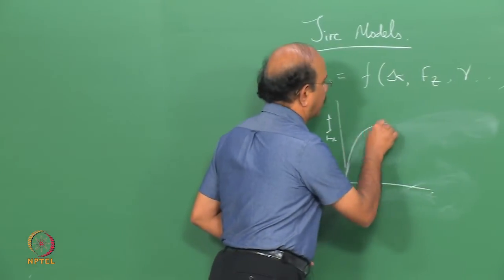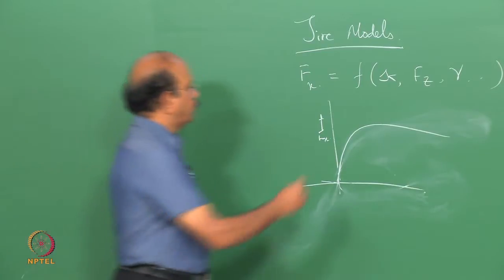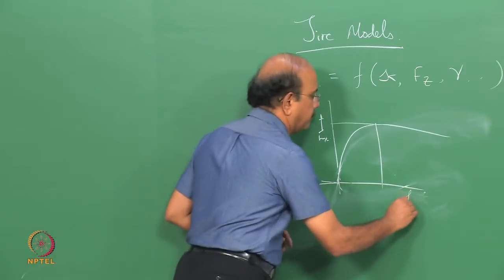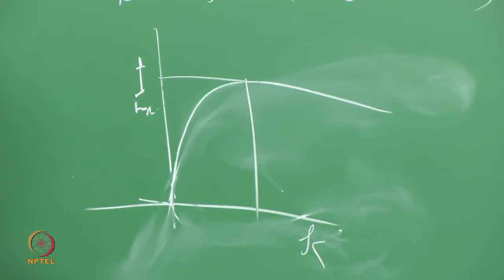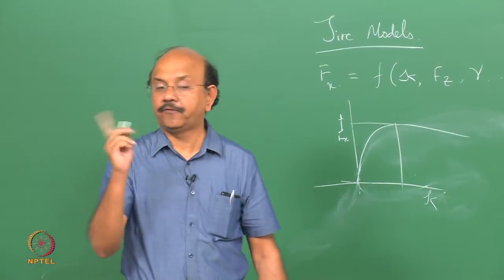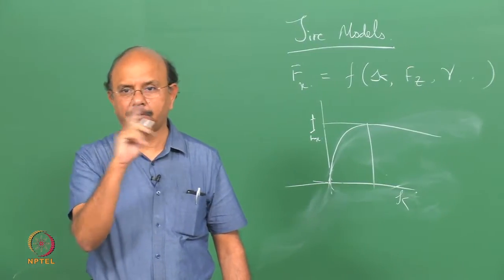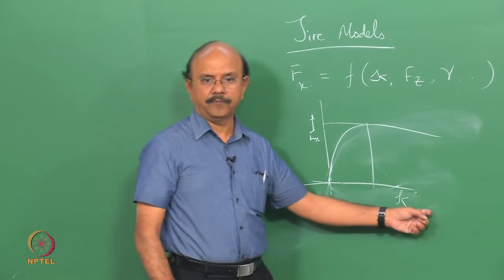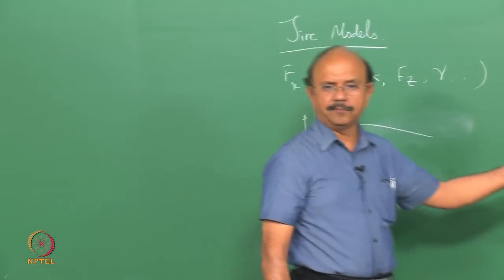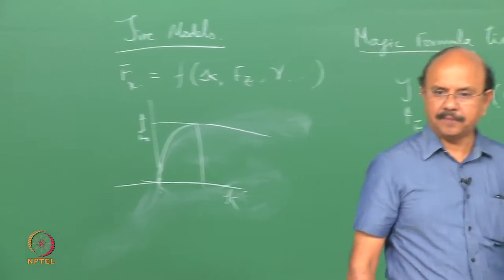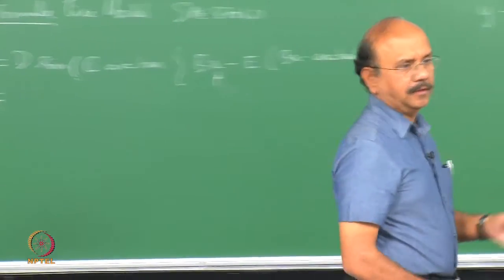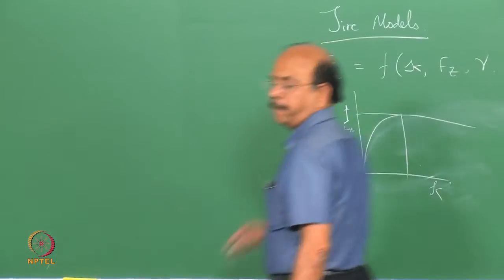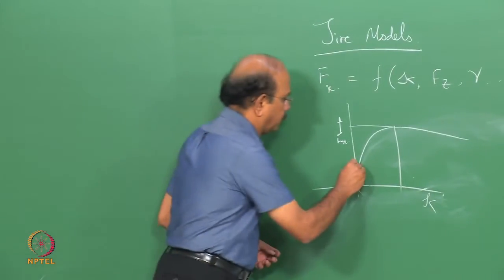Suppose I have a curve — what is the maximum force? I know this is the maximum force and that is the kappa, Fx versus kappa. What is kappa here? Kappa is our slip. We had defined two slips — the theoretical slip called sigma and the practical slip called kappa. That is what I am plotting here. Kappa is the slip, percentage slip if you want to call it. Remember: V minus omega·r_d and so on.